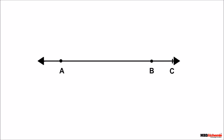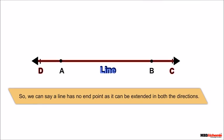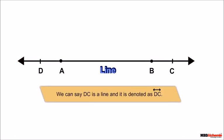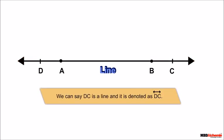Now, if we extend the line indefinitely from this point in the opposite direction, we get a line. A line has no end point, as it can be extended in both directions. Here, DC is a line, and it is denoted by a line with a double arrowhead over the top of the letters, like this.